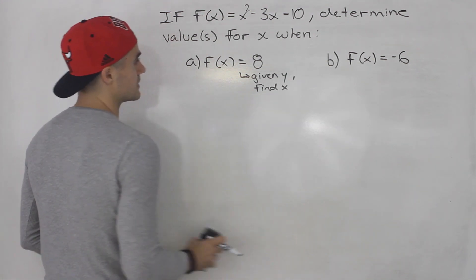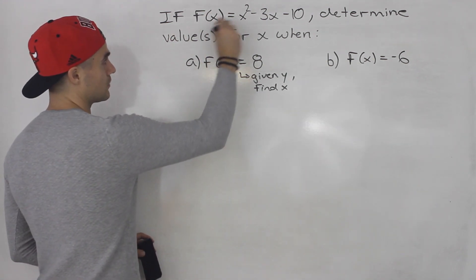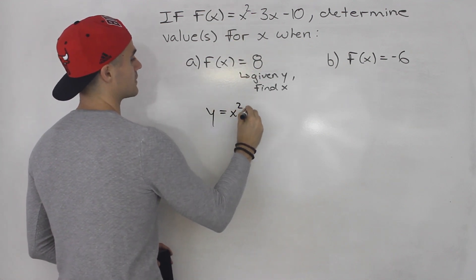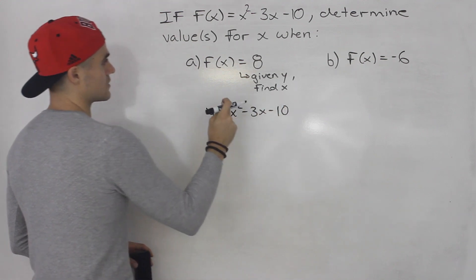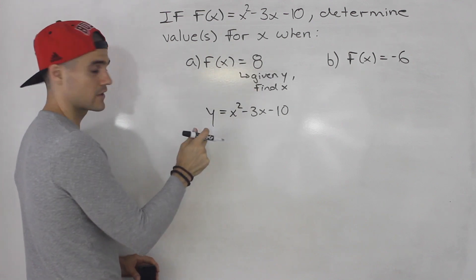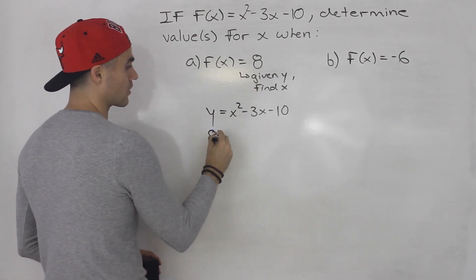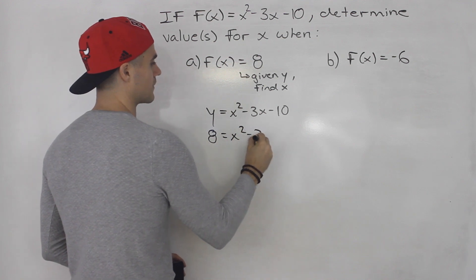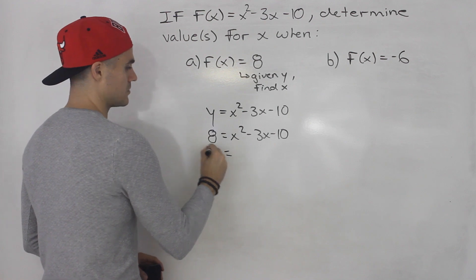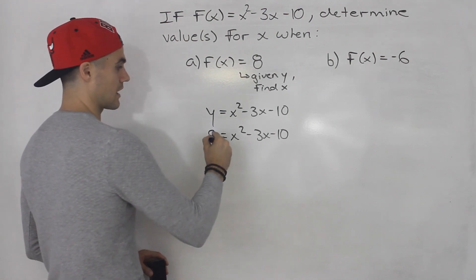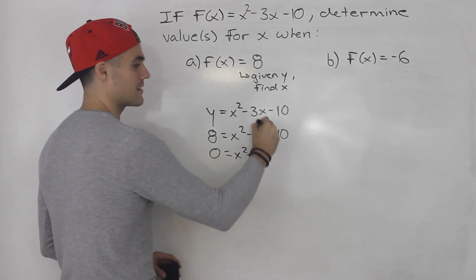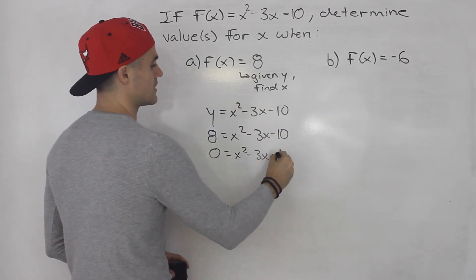So the way you do this is you could rewrite this function as y equals x² - 3x - 10. They're asking for the x values when the function equals 8 or when the y value equals 8. So you're plugging in 8 for y. Notice you could bring the 8 over so you'd be left with 0 on the left side. This positive 8 turns into negative so you'd have x² - 3x and the -10 minus 8 gives you -18.